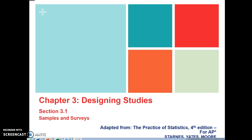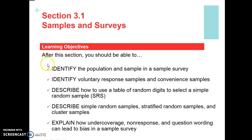Today we're just going to do an introduction to samples and surveys. Before you even begin a study, you want to make sure that you take a sample that is a good representation of the population. At the end of the section, you'll be able to: understand the population and sample within a sample survey; understand the difference between a voluntary response sample and a convenient sample; describe how to use a table of random digits to select a simple random sample (SRS); describe how simple random samples, stratified random samples, and cluster samples differ; and explain how undercoverage, non-response, and question wording can lead to bias in a sample survey.